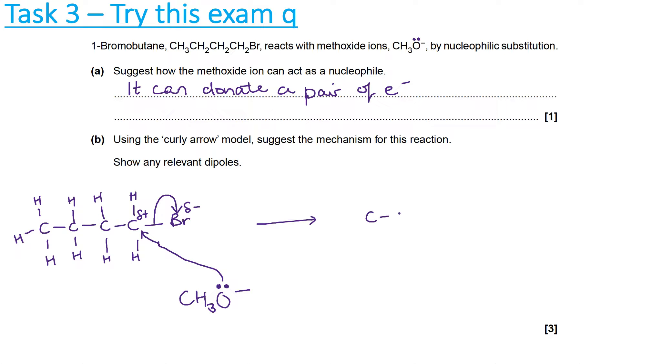That then forms this product which is butan-1-ol. Don't forget the other product of this mechanism is Br minus with the lone pair. In terms of marks, you get one mark for the first curly arrow from the lone pair on methoxide to carbon, a second mark for the correct dipole and the curly arrow from the C-Br bond to bromine, and your third mark is for drawing the correct products, both of them.